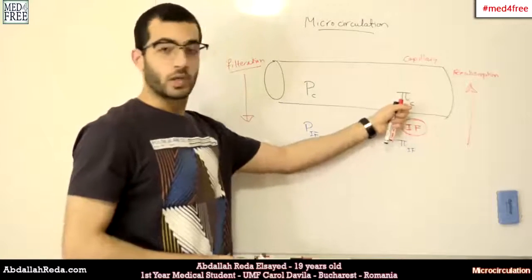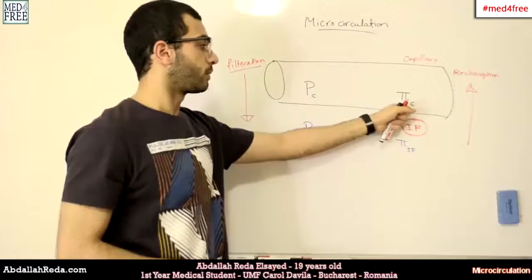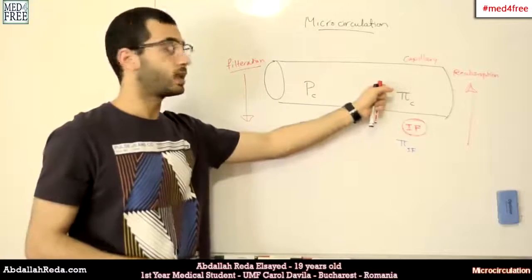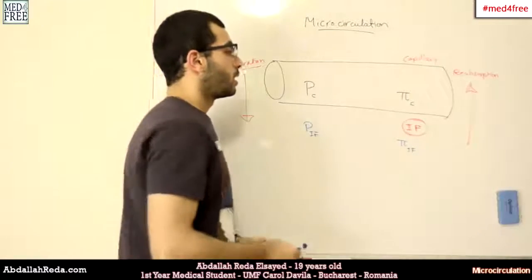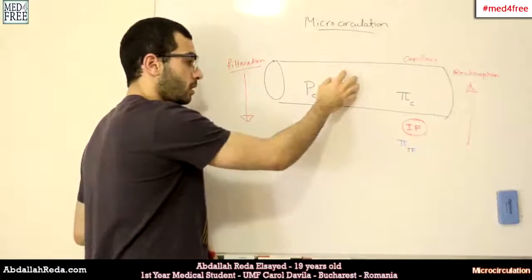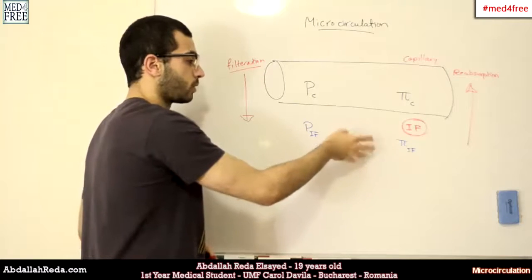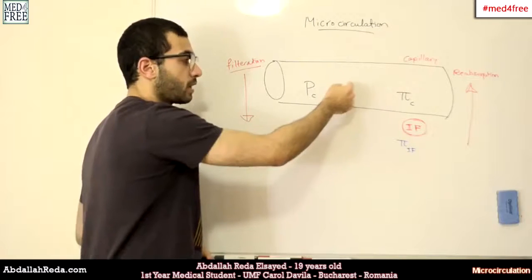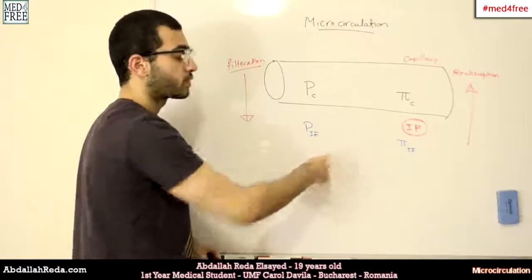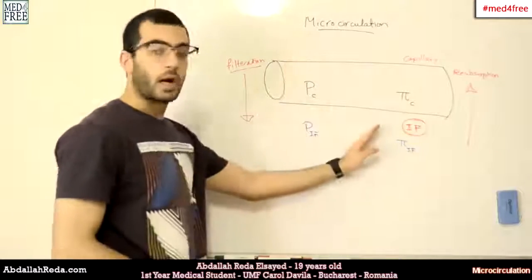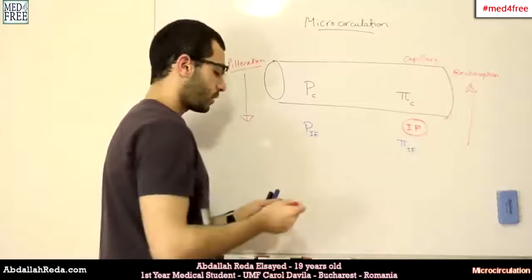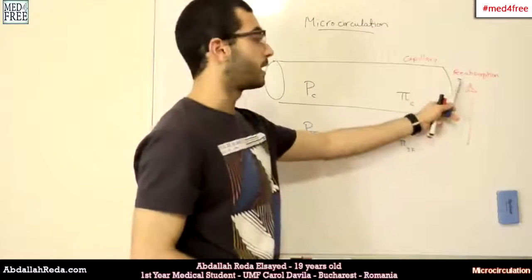The osmotic oncotic pressure, or colloidal osmotic pressure: if there is a higher amount of proteins inside the capillary, this will increase the concentration. An increase in concentration here will not push liquid out; instead, water will move from the interstitial fluid into the capillary, because water moves from higher water concentration to lower water concentration. So the osmotic oncotic pressure is the main force that favors reabsorption.